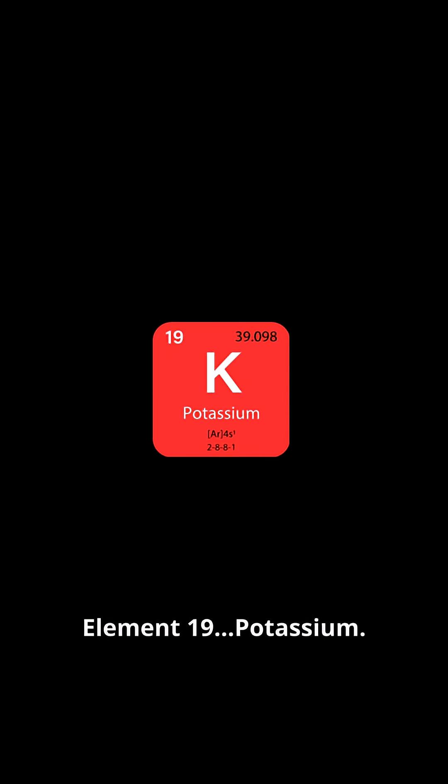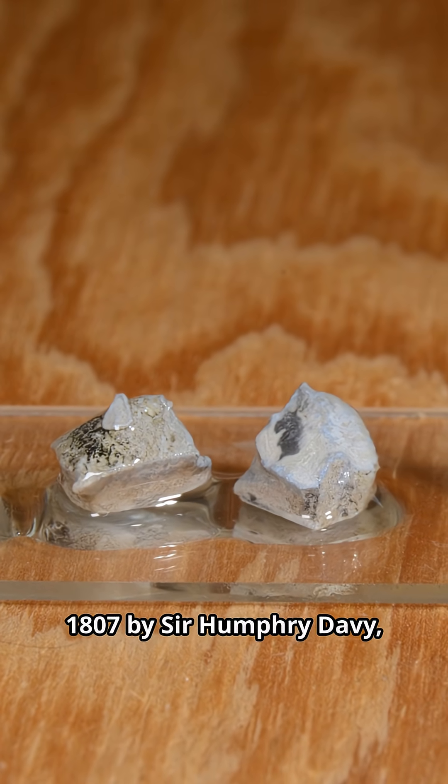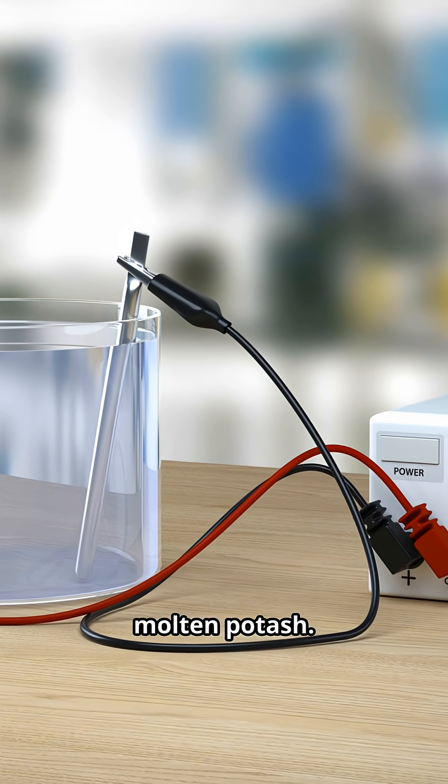Element 19. Potassium. Potassium was first isolated in 1807 by Sir Humphrey Davy, who used electrolysis to separate it from molten potash.